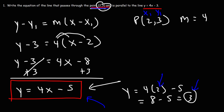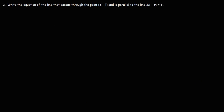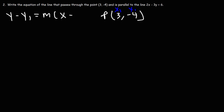Now let's work on another example. Write the equation of the line that passes through the point (3, negative 4) and is parallel to the line 2x minus 3y equals 6. We have the point of interest: x1 is 3, y1 is negative 4. We'll use the point-slope formula again. We know x1 and y1, and since the lines are parallel, the slopes will be exactly the same. We need to find m.